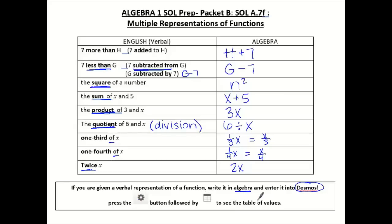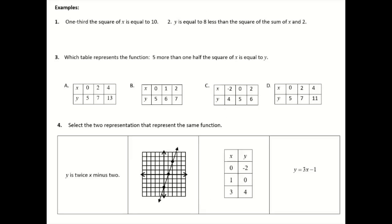So let's take a look at some examples. Number 1 says one third the square of X is equal to 10. So it's good to read it all first, and then let's break it down. So I'm going to do the square of X first, and then take one third of it. So one third the square of X is equal to 10. We translated that one.